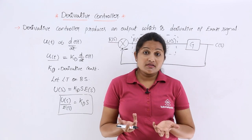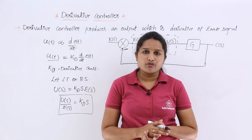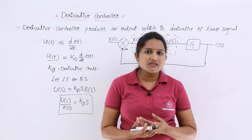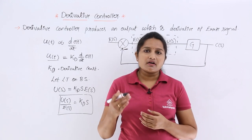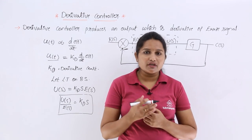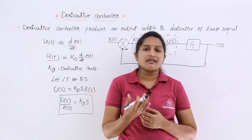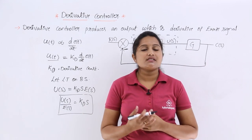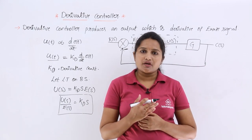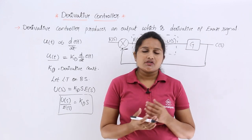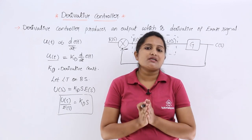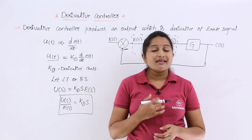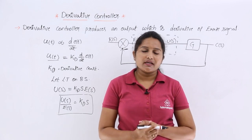However, there are some disadvantages to the derivative controller. The steady-state error may increase because the order or type number of the system is going to decrease. Because of that, the steady-state error of the system may increase when using this derivative controller. In the next class, we will see about the integral controller.